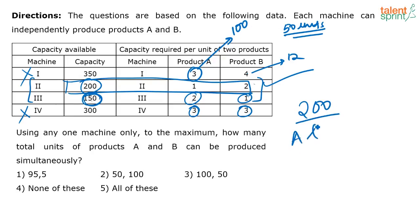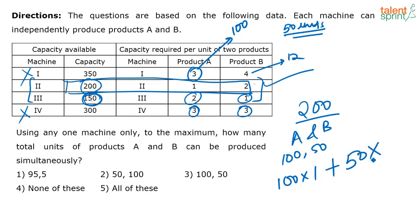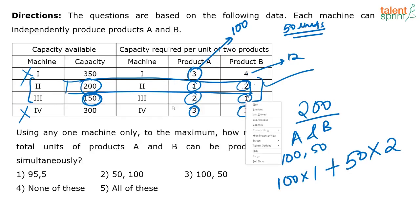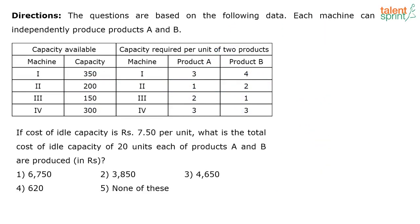Simultaneously means producing everything together using the available capacity. With machine two's 200 capacity, producing 100 units of A and 50 units of B simultaneously means 100 units of capacity are used for A and 100 units for B (50 × 2). Comparing machines 2 and 3: capacity of two is higher than three, and they have similar ratios of capacity usage. Since machine two has more capacity, it can produce more units overall.